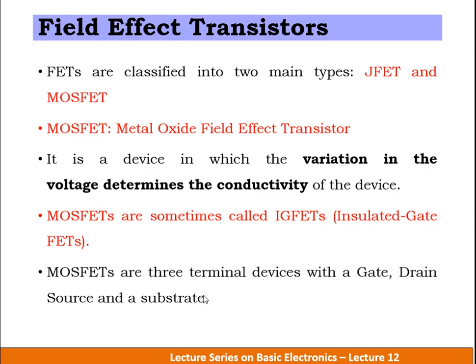MOSFETs are three-terminal devices. The three terminals are gate, drain, and source, along with a substrate. In a MOSFET, the drain current is completely controlled by the applied gate voltage.